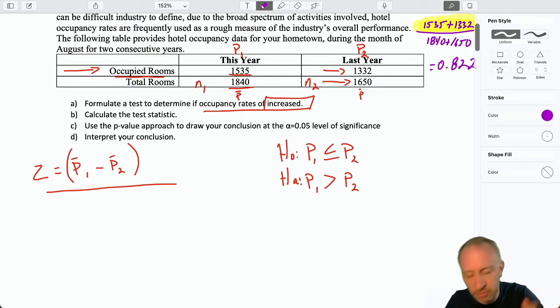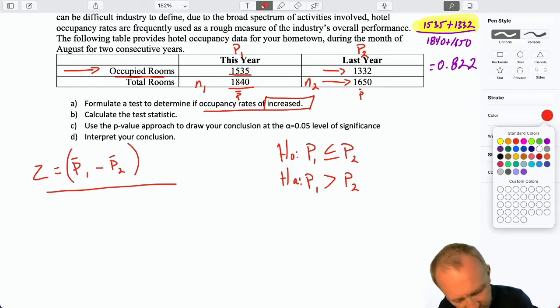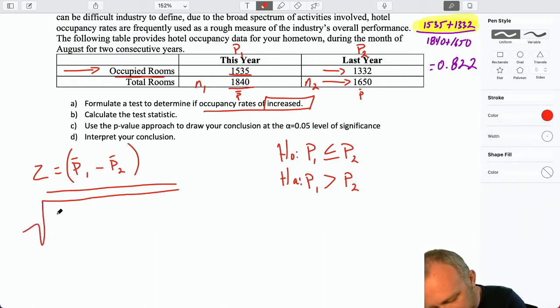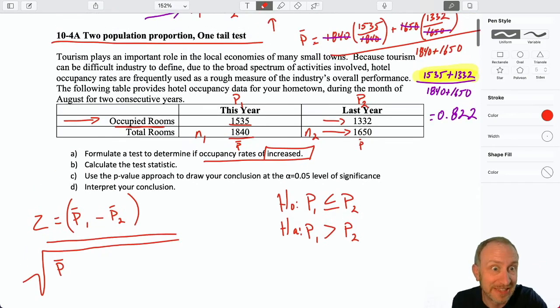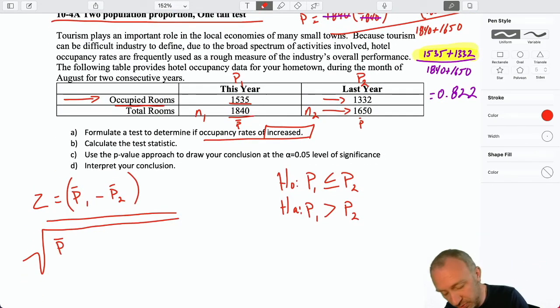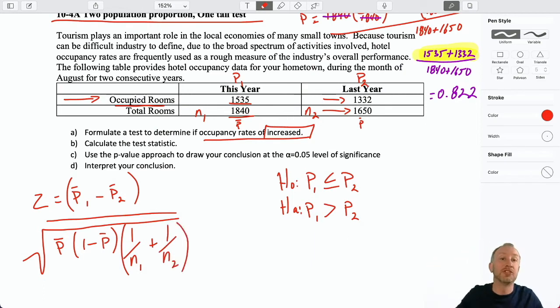So here we're a step ahead of ourselves. For our standard error, this is just simply going to be the square root of that pooled estimator, that one that we just calculated. So that's our pooled estimator times 1 minus that pooled estimator over 1 over n1 and 1 over n2. Now we can go ahead and put in our values.